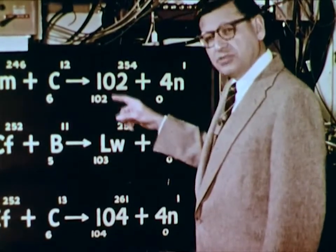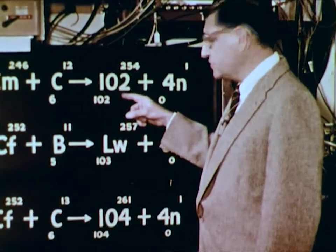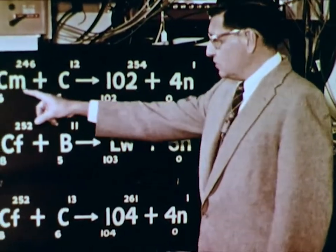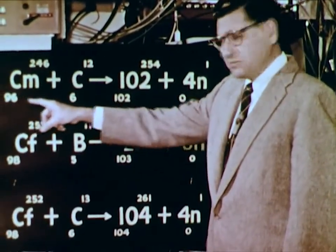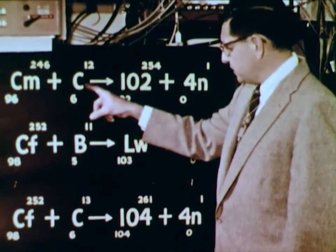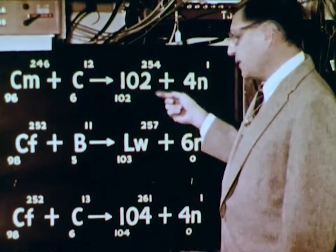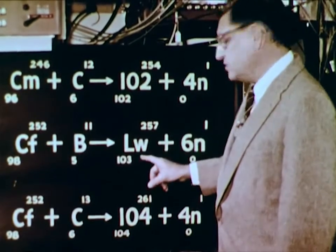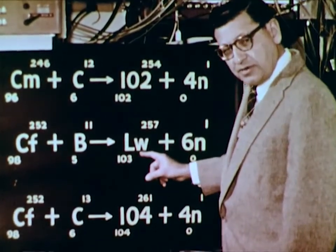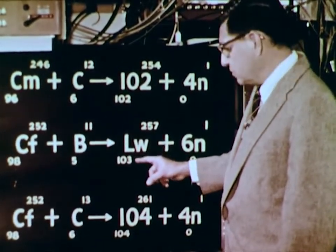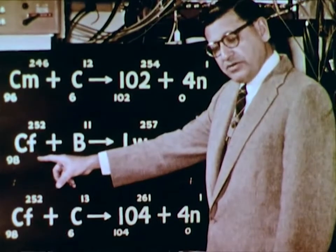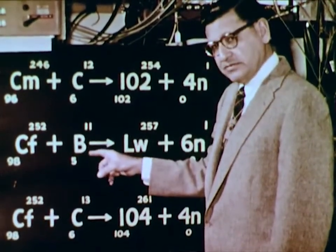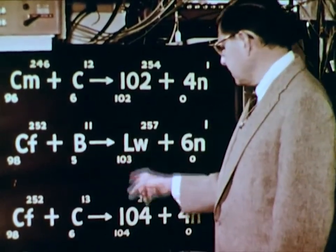Element 102 was discovered at the HILAC in 1958. The reaction used was curium — element 96 — bombarded with carbon ions, element six, to make a short-lived three-second isotope. In 1961, we found lawrencium, element 103, and this time we bombarded element 98 californium with boron-11 ions. Boron is element number five.